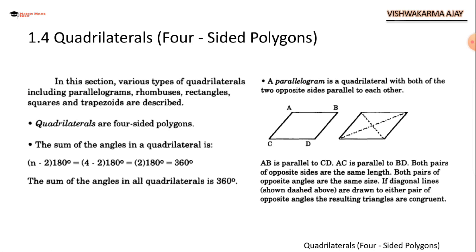In this section various types of quadrilaterals including parallelogram, rhombus, rectangles, square and trapezoids are described. Quadrilaterals are 4 side polygons. They have 4 sides. The sum of the angles in a quadrilateral is given by the formula n minus 2 times 180 where n is the number of sides or number of angles.